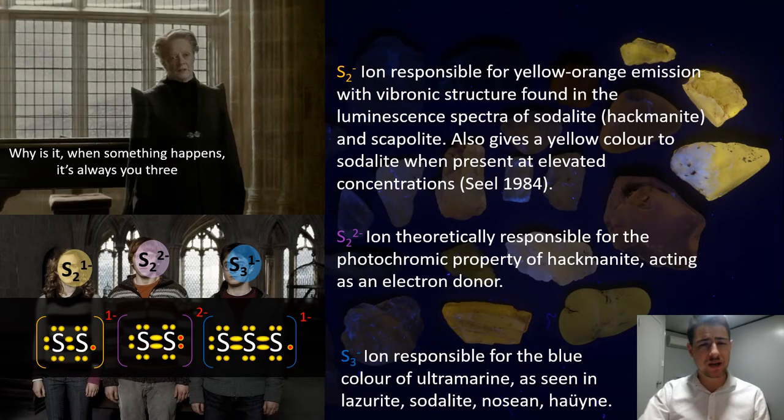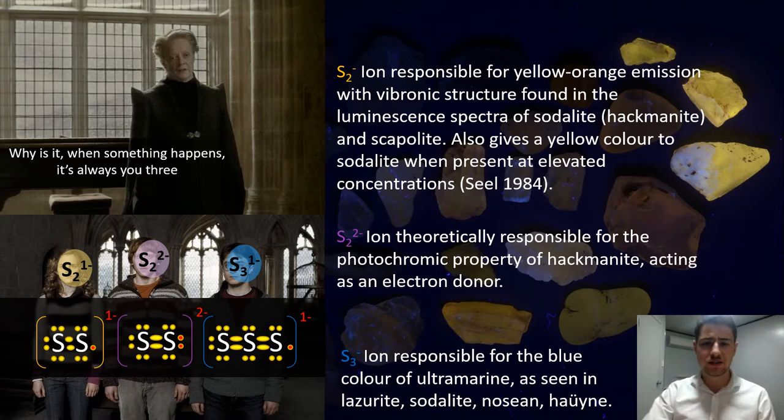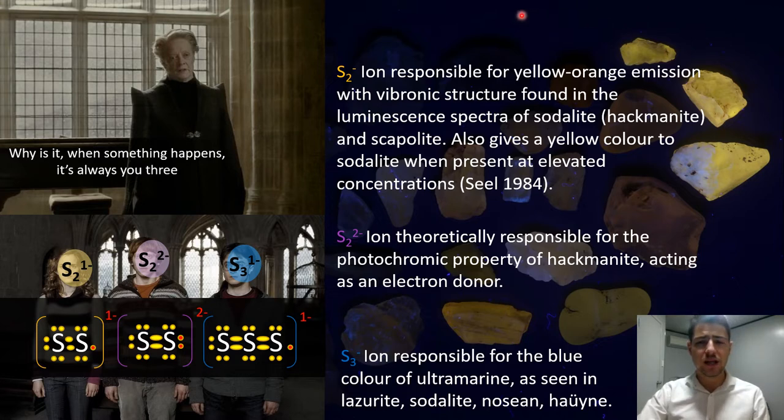All we really care about today are three of these ions: S2-, S22-, and S3-. S2- causes the fluorescent properties of sodalite and scapolite. S22- causes the photochromism of hackmanite. S3- causes the blue color found in your favorite feldspathoids. It's quite clear there is much difference between S2- and S22-, it's only a matter of an extra electron, and yet it's super important.